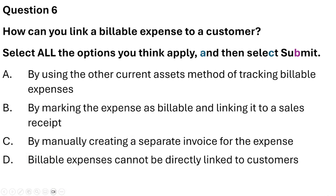Question 6: How can you link a billable expense to customers? Select all options that apply. Option A: By using the other current assets method of tracking billable expenses. Option B: By marking the expense as billable. Option C: By manually creating a separate invoice for expenses. Option D: Billable expenses cannot be directly linked to customers. The correct answer is Option A — using the other current assets method — and Option C — by manually creating a separate invoice for expenses.